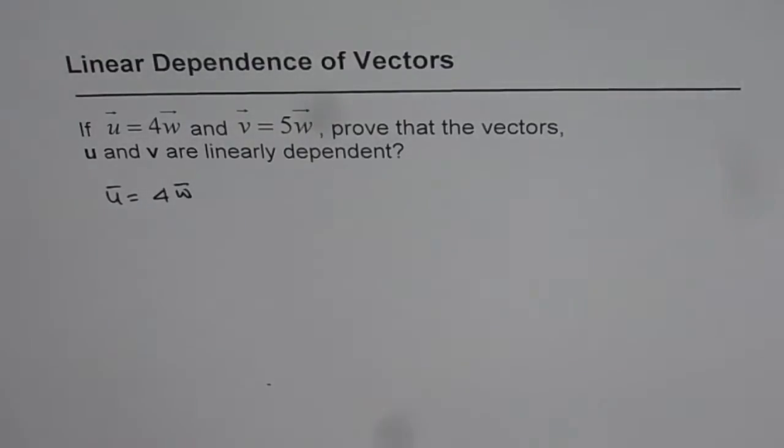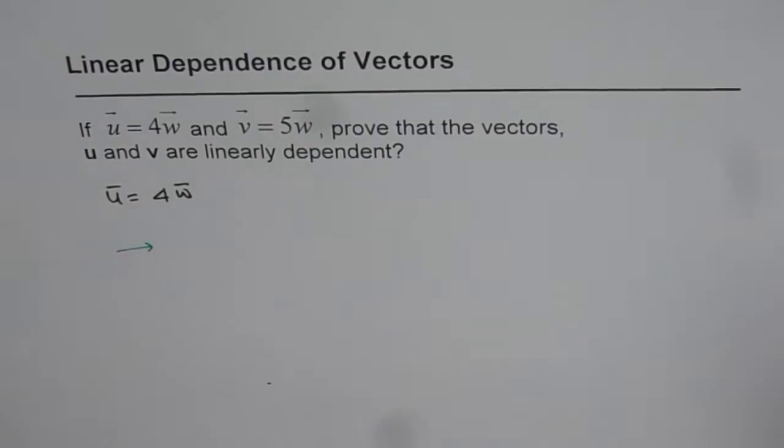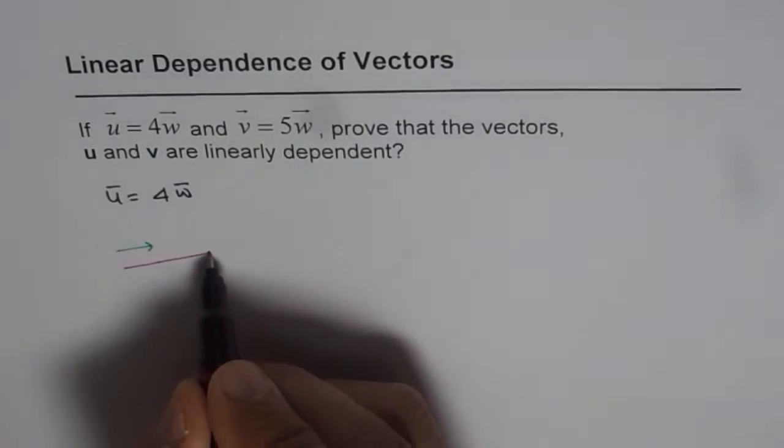Let's say this is my vector w, then u is 4 times w. That means it is 1, 2, 3, 4.